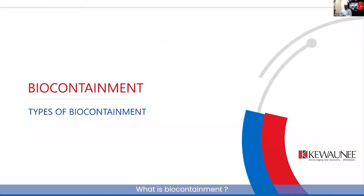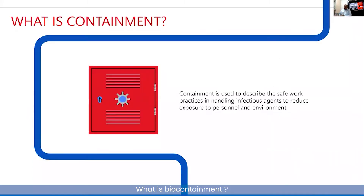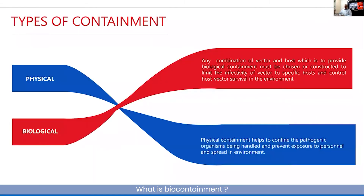Now let's move on to understand containment. We have already covered what biosafety levels are and what a biohazard is. Containment is any means or science we apply to make sure we are able to confine a microorganism from exposure to people and to the environment, thereby preventing the risk of disease. There are two primary containment methodologies: biological containment and physical containment.